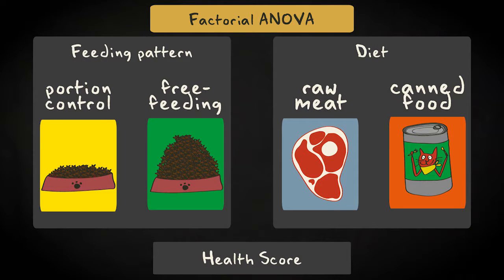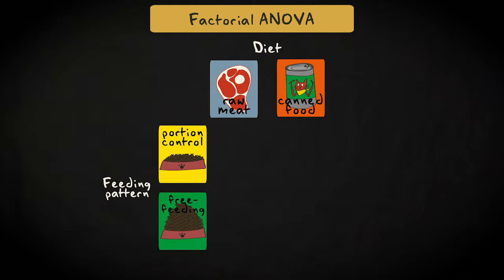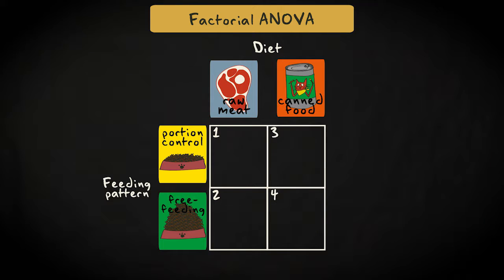Suppose we want to investigate the effect of raw meat versus canned food, and the effect of portion control versus free feeding on cat health, rated on a scale from 0 to 10. We cross these factors by creating four groups of cats that are randomly assigned to be fed: one, raw meat in controlled portions appropriate for their age, sex, and breed; two, raw meat fed freely; three, canned food in controlled portions; and four, canned food fed freely.